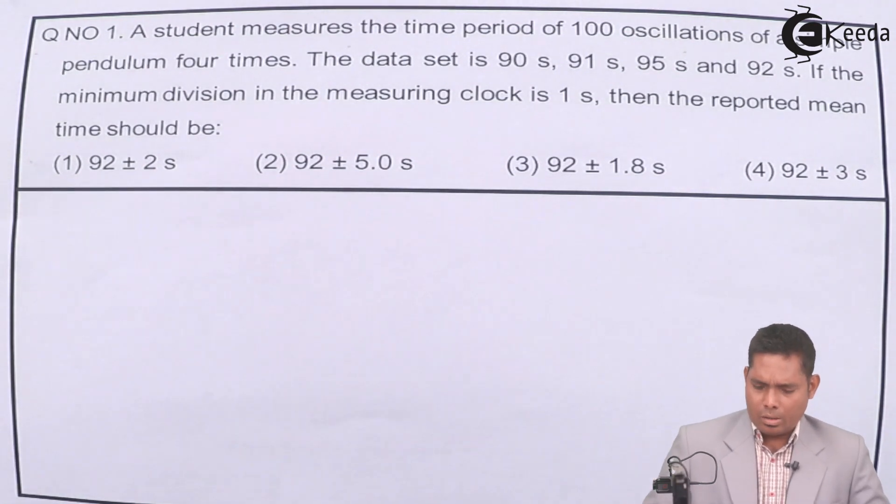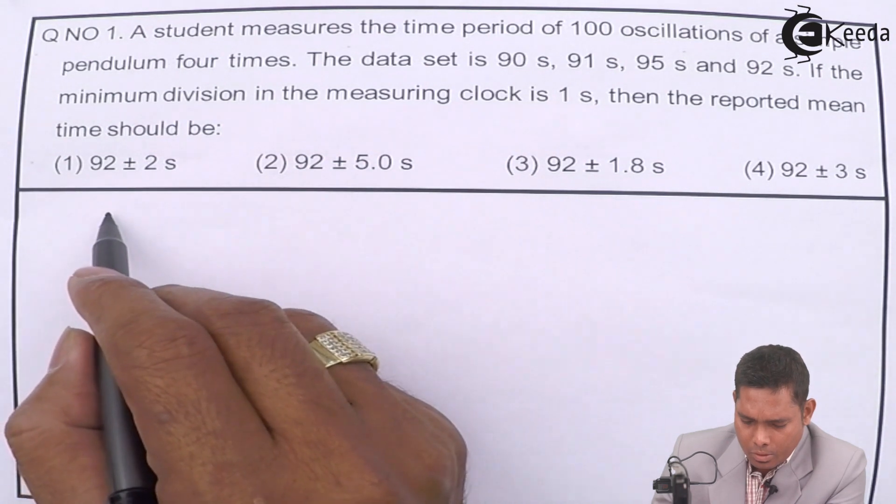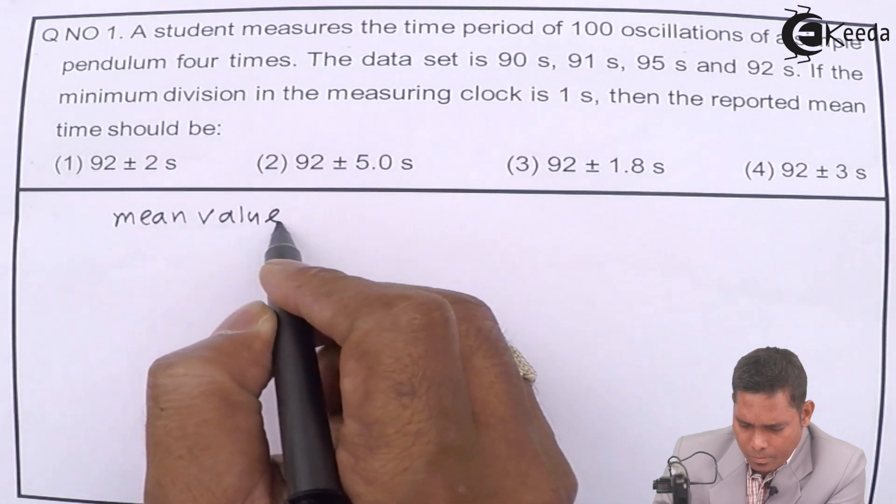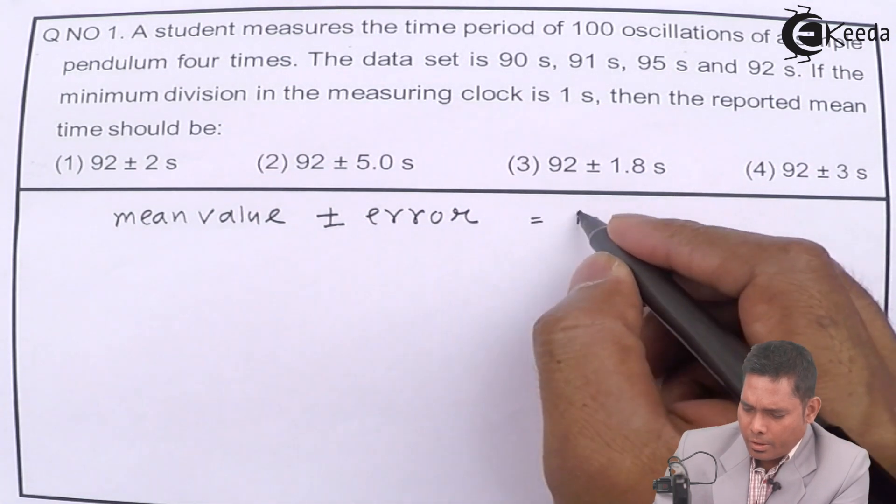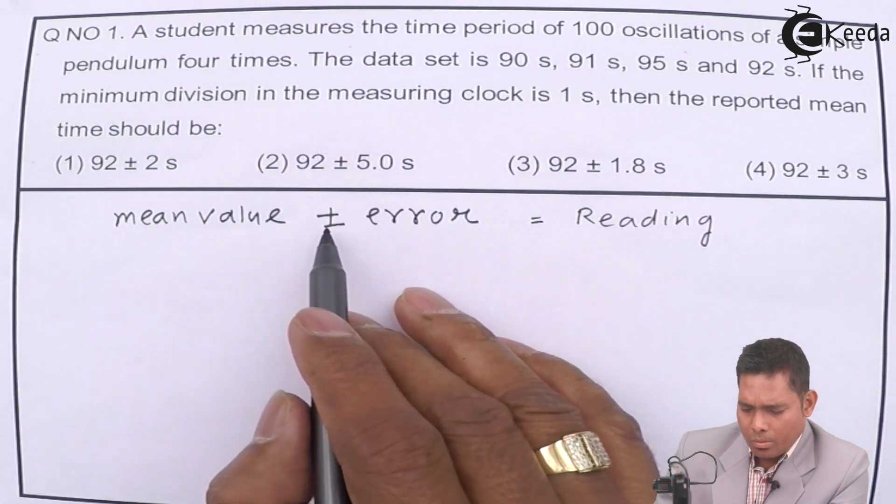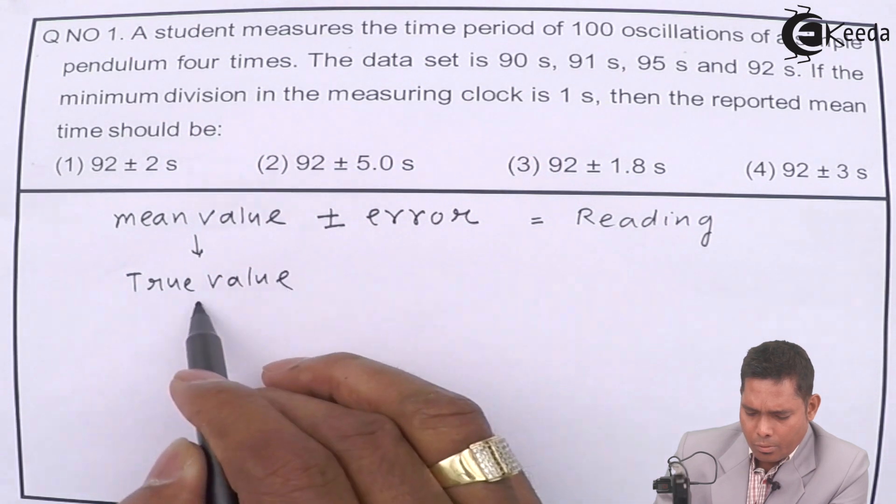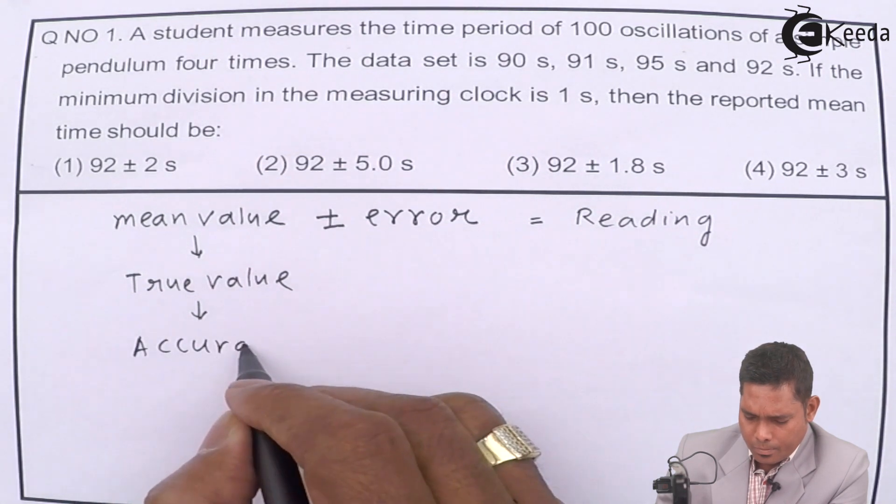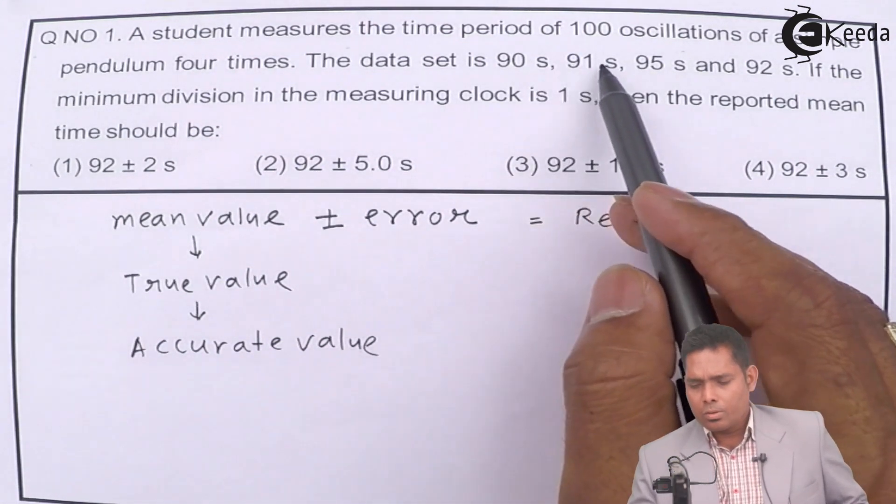Any reporting time, any expression or measurement is done in terms of some mean value plus minus the error involved. This is how we write the reading. The reading is mean value plus minus error. Mean you can call it true value, we will also call it accurate value.